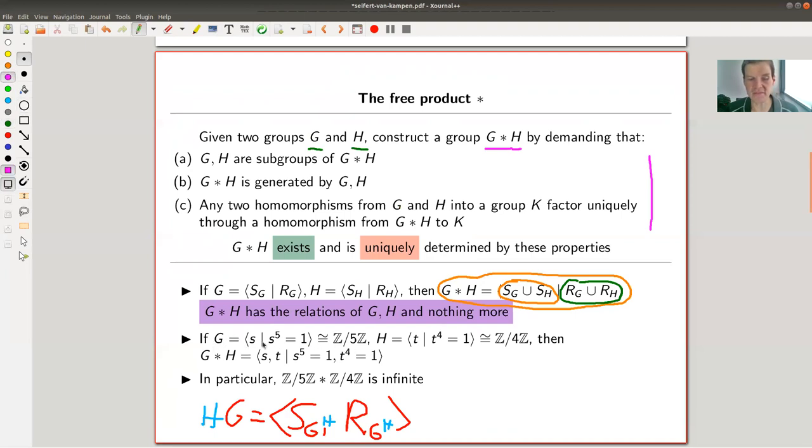In particular, G star H will never have cross relations. Let's have a look at an example. G is this group here, Z mod 5, so I have one generator S and the generator to the fifth power is one. I have H with generator T and the fourth power of T is one, that's Z mod 4.